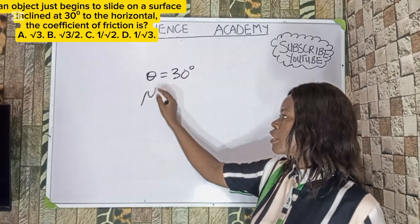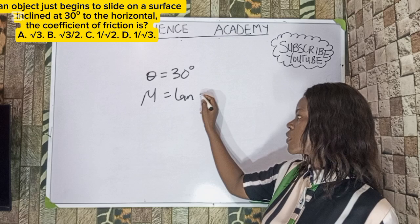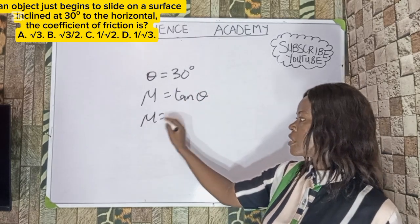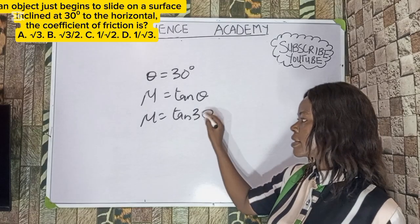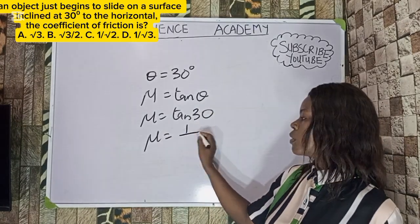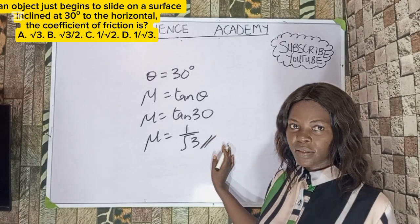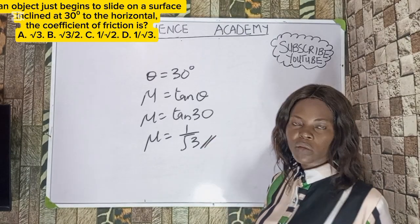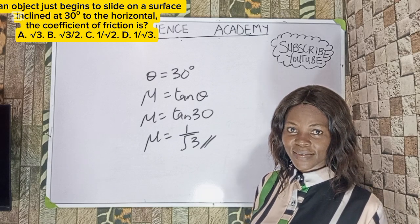From the question, θ is 30 degrees. So μ = tan 30° = 1/√3. The correct option to this question is Option D.